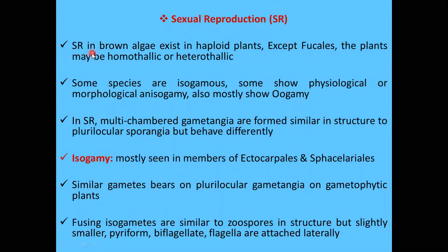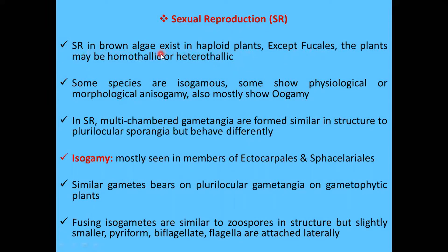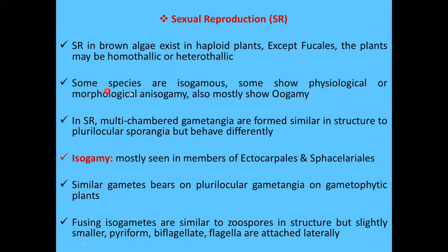Sexual reproduction in brown algae exists in haploid plants, except the members of Ectocarpales. The plants may be homothallic or heterothallic. Homothallic plants contain both the male and female sex organs on the same plant, while in heterothallic plants the male and female plants are different.